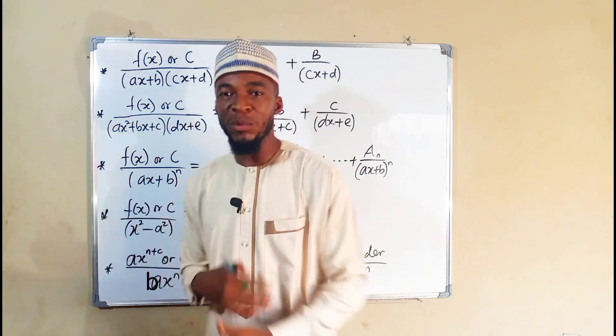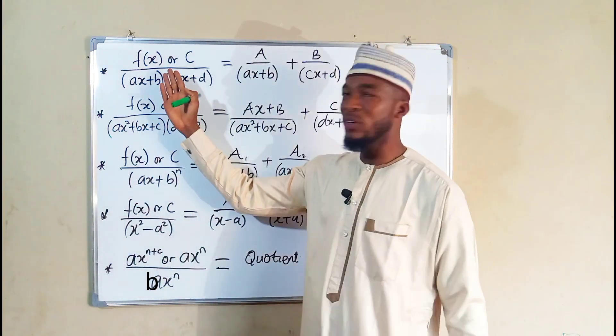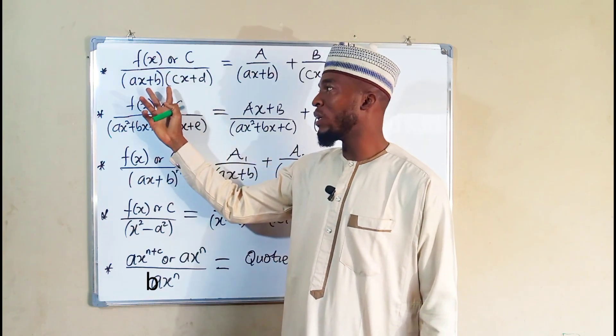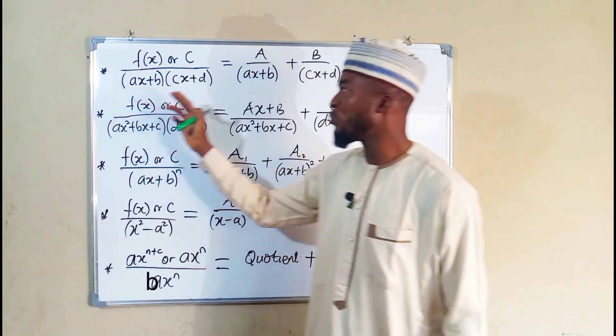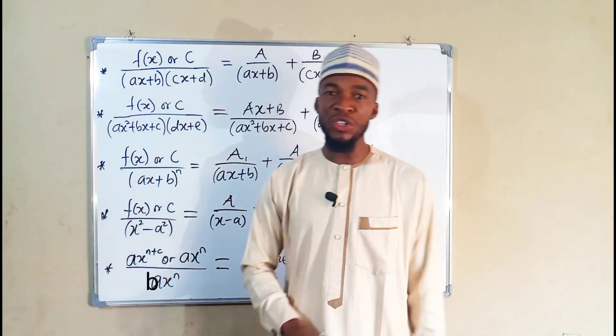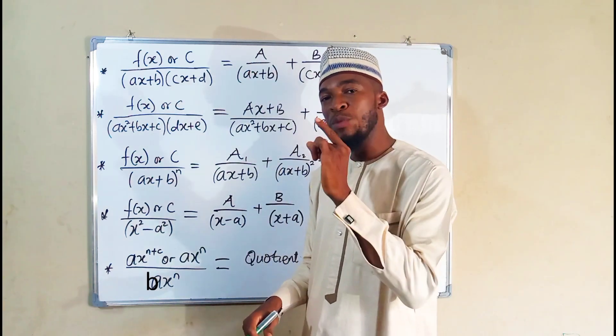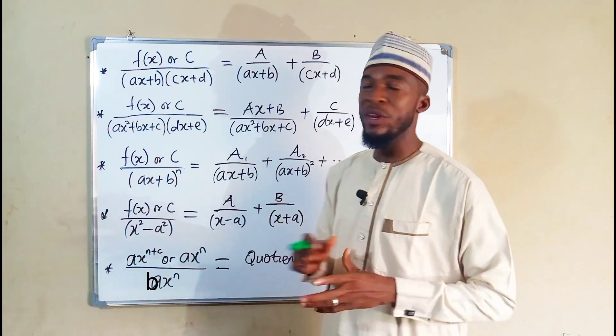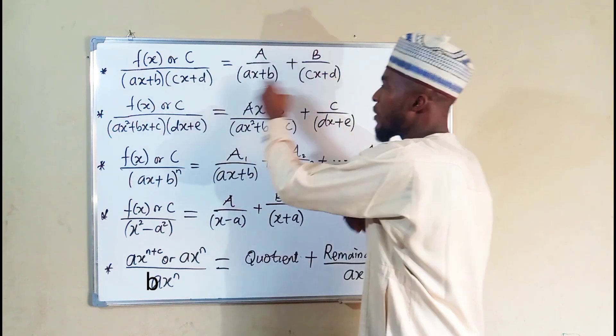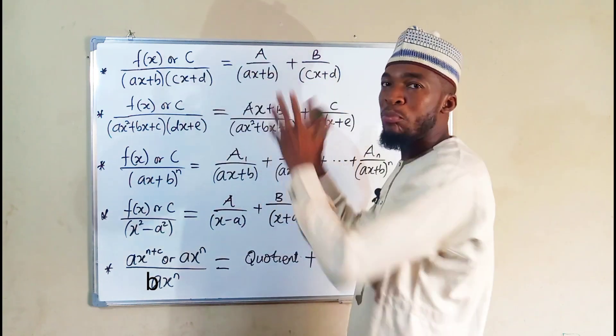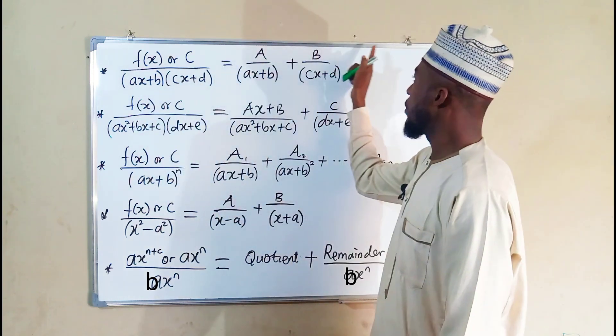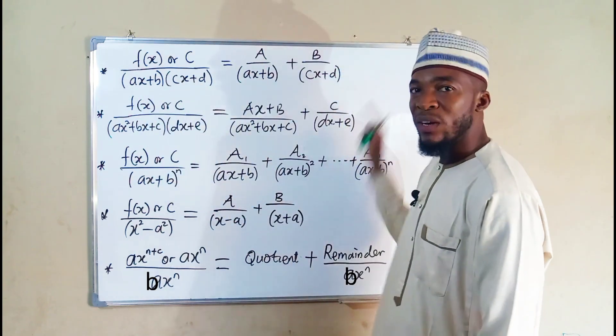So now let me highlight some of them for you. You can see the first one is when we have a function to the top or a constant divided by linear factors. You know a linear factor is going to contain a constant as its numerator because a numerator is always one degree less than the denominator. This is why we have A over the first factor plus B over the second factor where A and B are constants. If we have another factor here, we are going to take another constant divided by that factor.